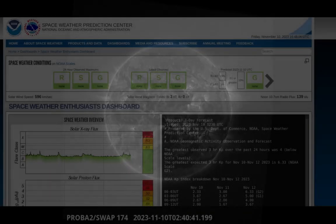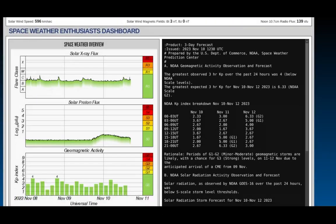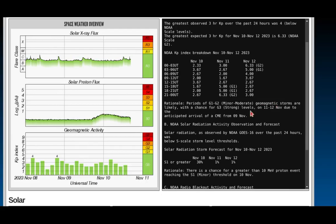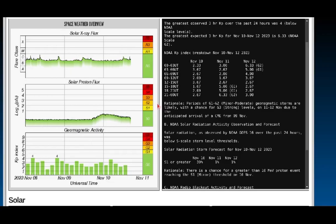The three-day space weather forecast issued November 10th, 2023. The greatest observed three-hour KP index over the past 24 hours was four, and the greatest expected over the next couple days, the 10th to the 12th, will be 6.33 expected to impact right around 21 UTC.